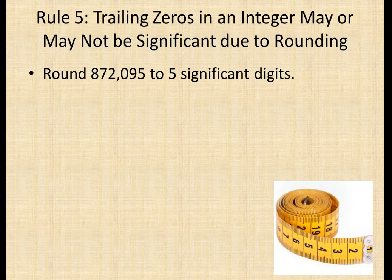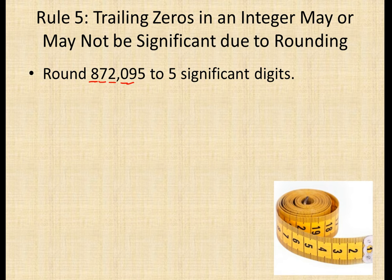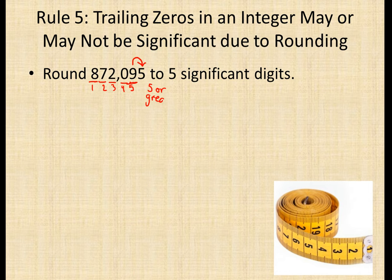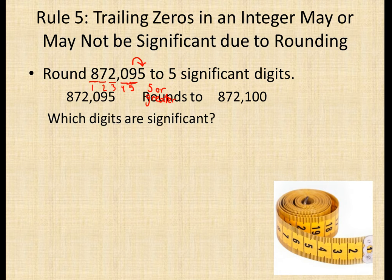We're going to round 872,095 to five significant digits. We look and see that 8, 7, 2, 0, 9 are the first through fifth significant digits. We then look at the digit to the right of the ninth — the 5 — and since it's greater than or equal to 5, our number becomes 872,100.